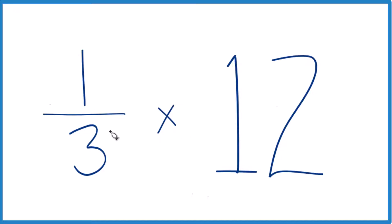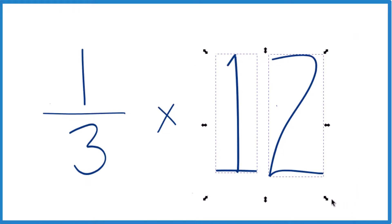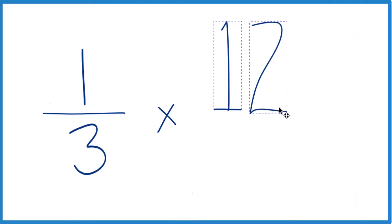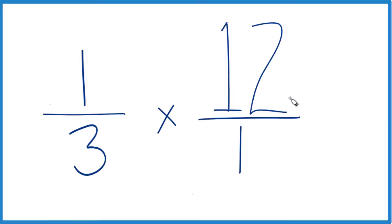So really we're asking what is one-third times 12? We can take the 12 here and write it as 12 over 1. Because 12 divided by 1, that's still 12. We haven't changed the value, just the way it's represented.